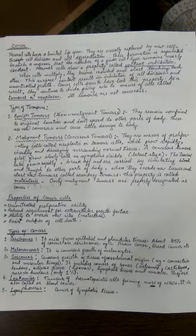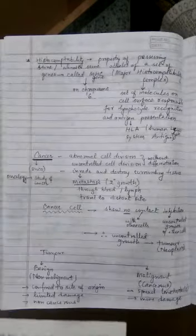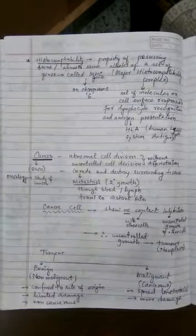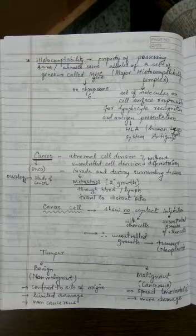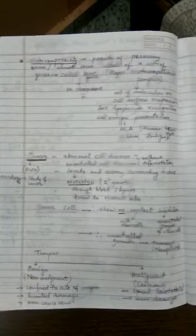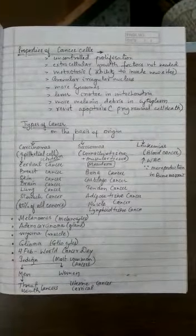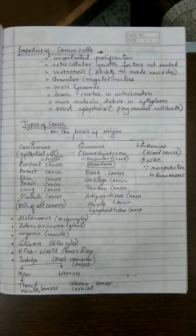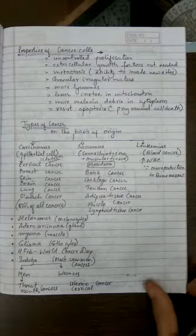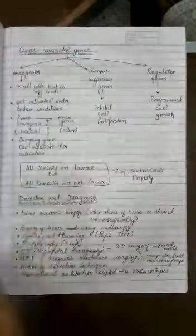Blood cancer is called leukemia. Other types covered include melanomas, adenocarcinomas, myoma, and glioma. The 4th of February is recognized worldwide as Cancer Day. Among Indian men, the most common cancers are throat and mouth cancer, while among Indian women, uterine and cervical cancer are the most common.